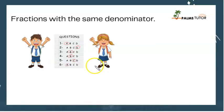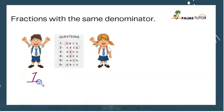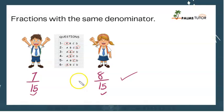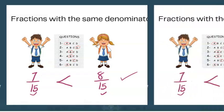Fractions with the same denominator means the whole was divided into the same number of parts. Think of it like a test score — same test, same total. If this person got 7 over 15 and this person got 8 over 15, who did better? 8 over 15, right? When fractions have the same denominator, we just compare their numerators. So 7 over 15 is less than 8 over 15.